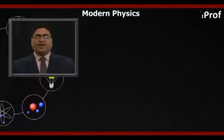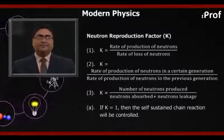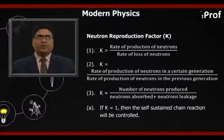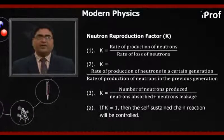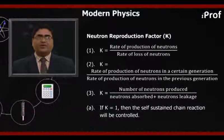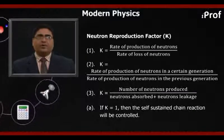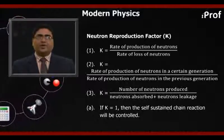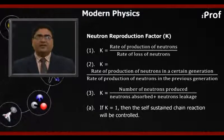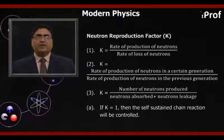Now let's see neutron reproduction factor K. K equals rate of production of neutrons divided by rate of loss of neutrons, or K equals rate of production of neutrons in a certain generation divided by rate of production of neutrons in the previous generation. K equals number of neutrons produced divided by neutron absorption plus neutron leakage.